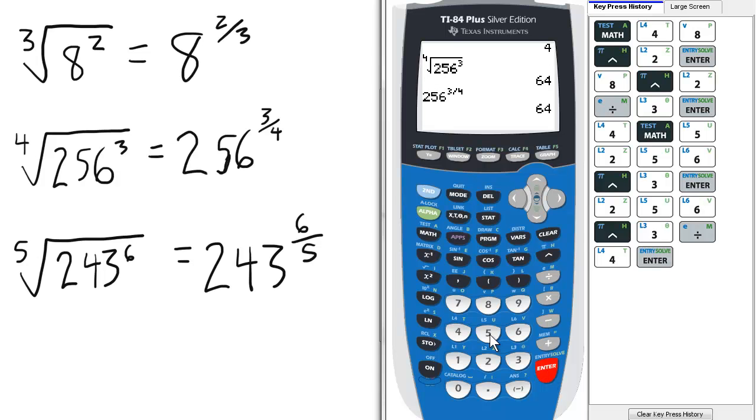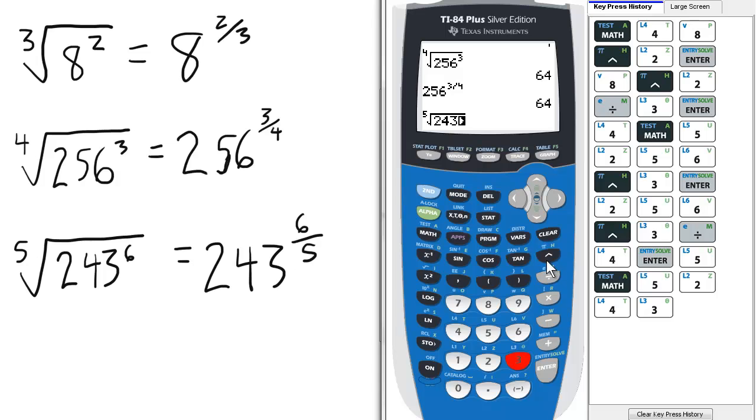Lastly, for the fifth root of 243 to the 6, we repeat the process, 5, math menu, select 5 for the x root, 243 raised to the 6, enter.